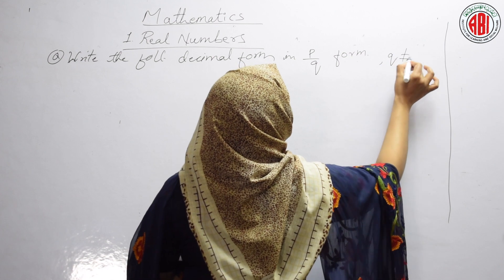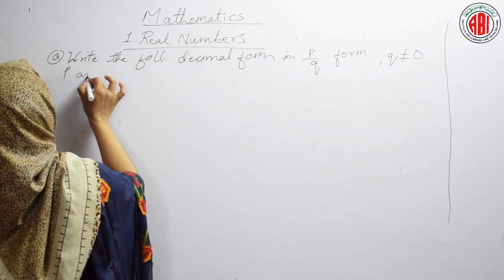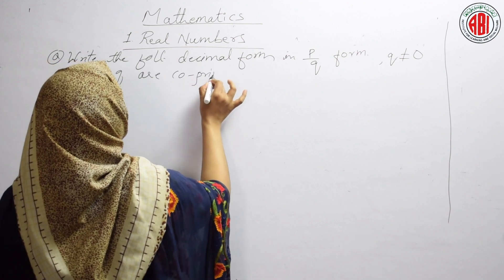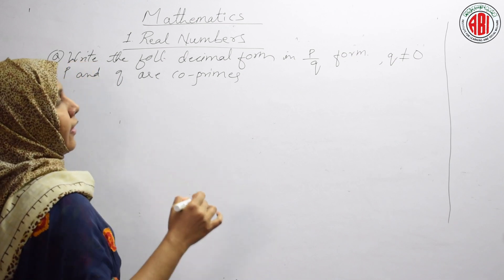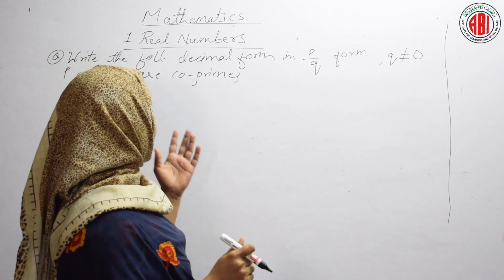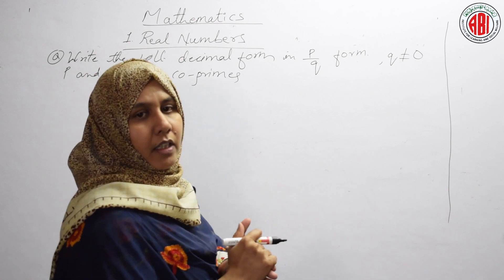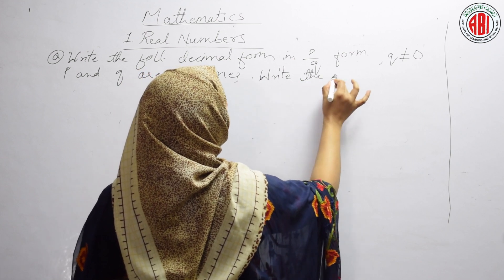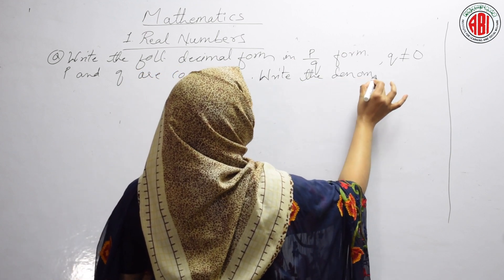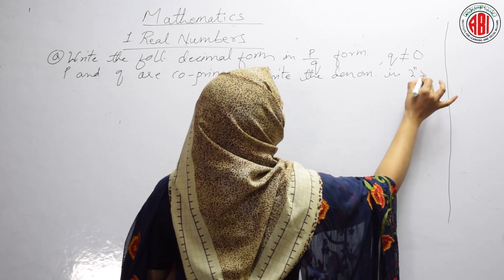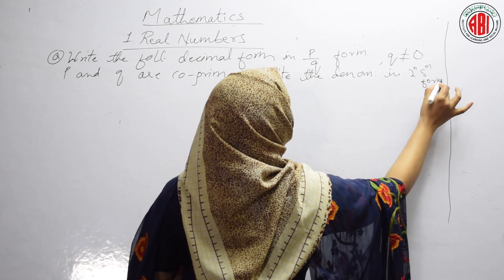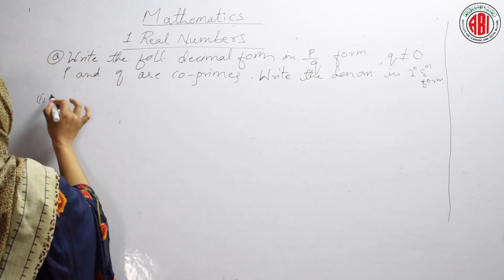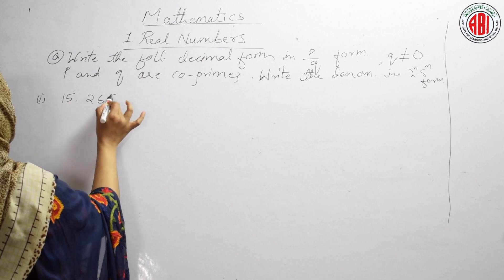Co-primes means numbers which have only one as a common factor. After solving this, you also have to write the denominators in the form 2ⁿ × 5ᵐ. Now we have the first question: 15.265. This is a decimal form — write this in the form of P by Q.